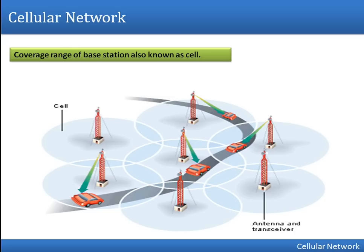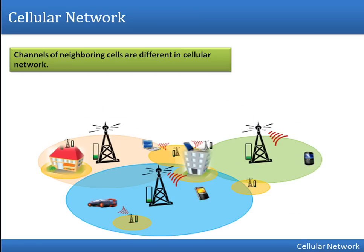The coverage range of a base station is also known as a cell. When we have multiple base stations and a mobile user is talking while driving, at some point the user is connected to one base station, then as they move they are connected to another. When a user changes location and moves from one cell to another, the new cell's base station has to handle that user's traffic. This process is known as handoff.